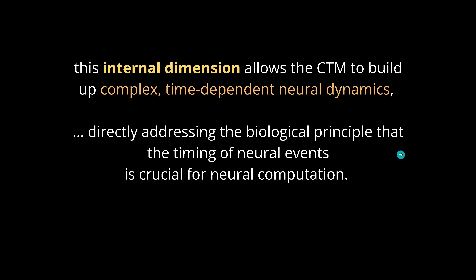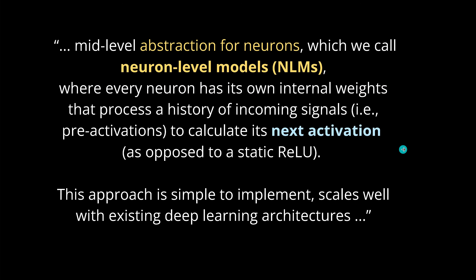The authors say this directly addresses biological principles. They present an abstraction for human neurons and call it a neuron-level model, where each neuron has its own internal weights that process a history of incoming signals — the pre-activations — to calculate its next activation. So we are now in the activation space, where instead of a static ReLU function we have a model. Simple implementation, scales well, and works with existing deep learning architectures.